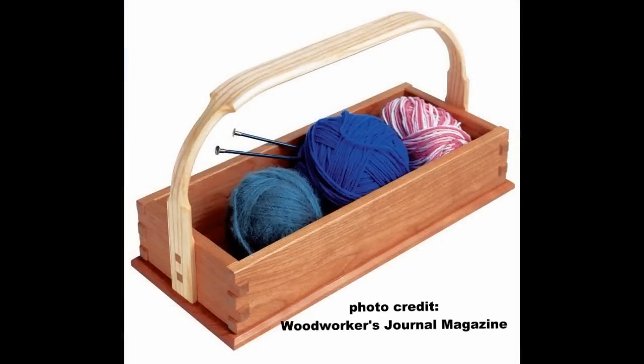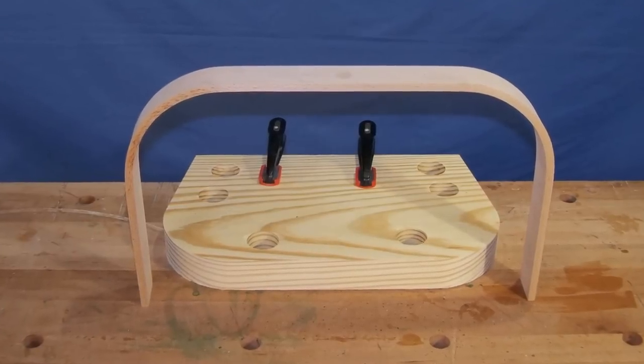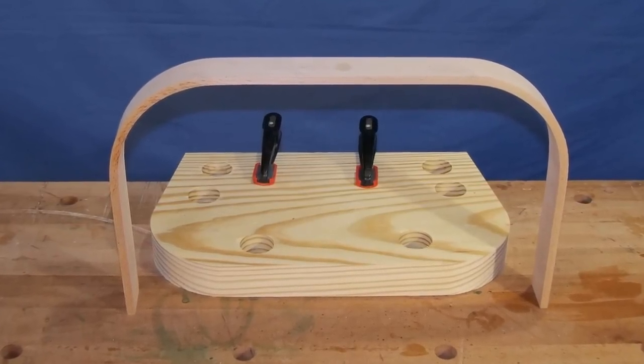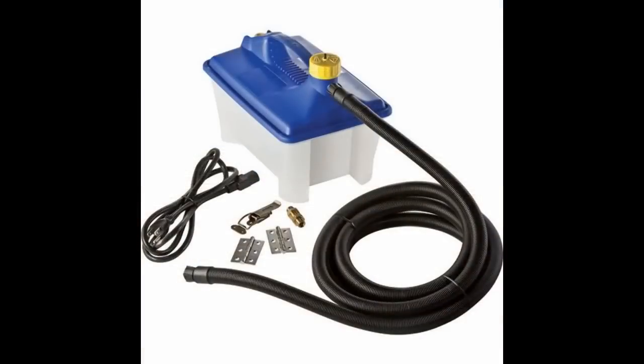The simple handle on this knitting carryall is best made by bending. It keeps the grain running along the profile of the handle for maximum strength. It could be made with laminations, but I chose to steam bend it.